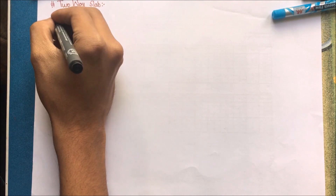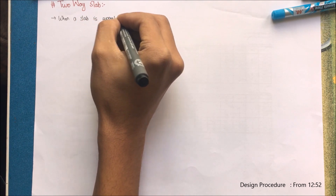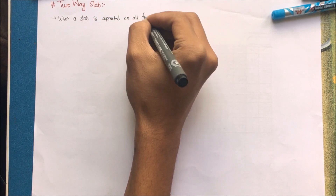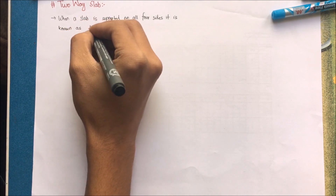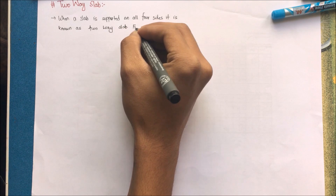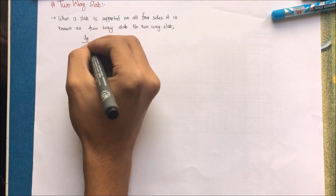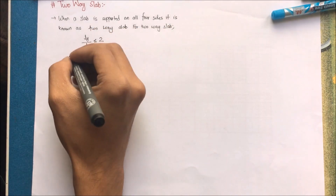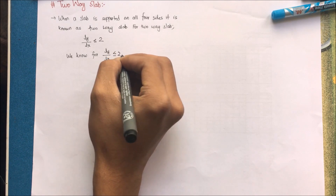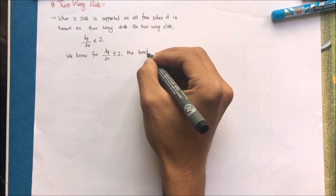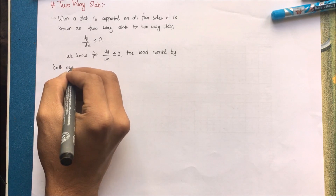This is a video on two-way slabs. For one-way slab, check the description for the link to the video. When a slab is supported on all four edges or sides, we can call it a two-way slab in general terms. For the specific definition: the ratio ly/lx — the ratio of length along the longer side to the shorter side — should be less than or equal to 2. For this condition, the load carried by both axes is comparable.